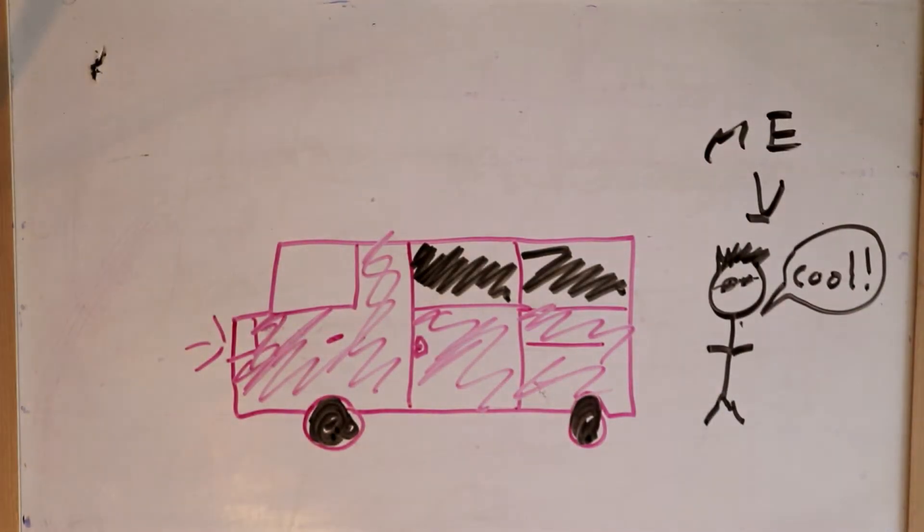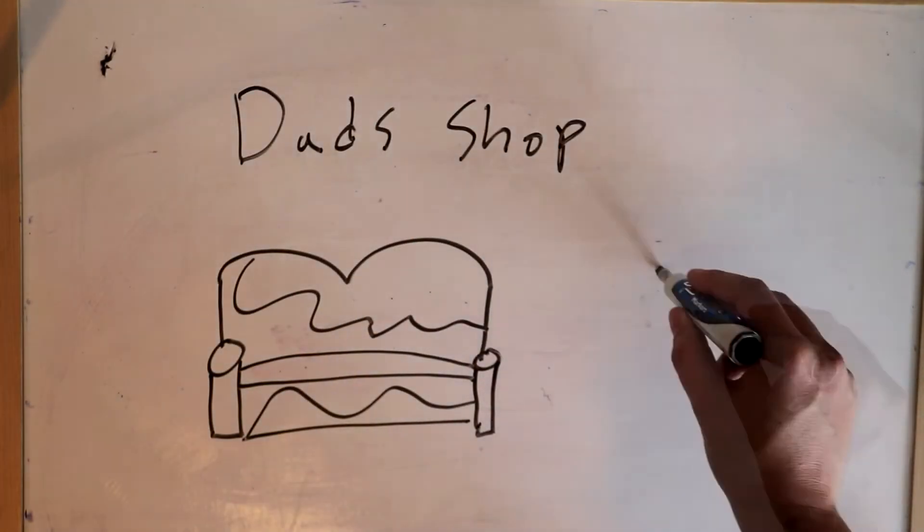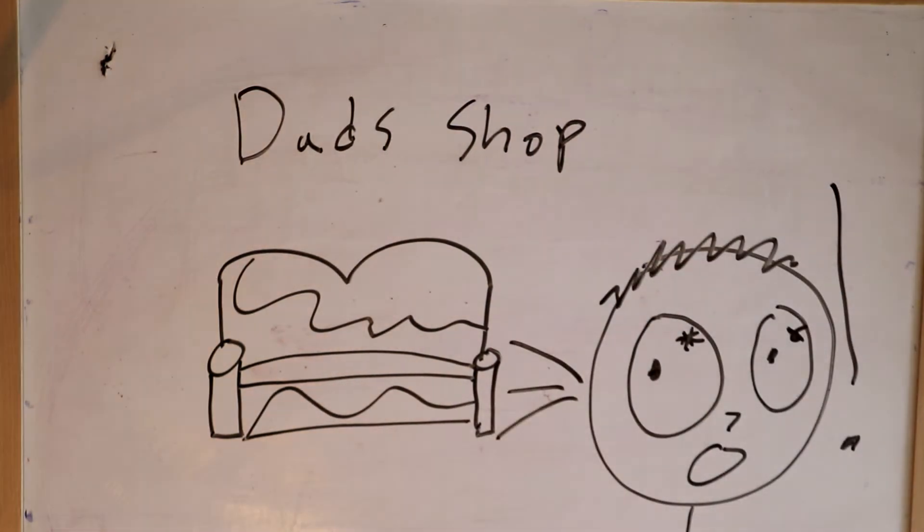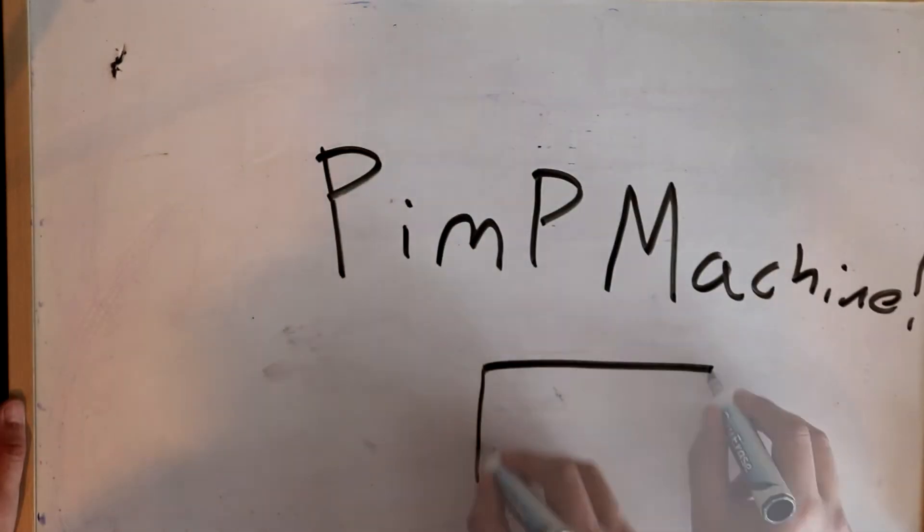So my dad owned a furniture store at the time, still does. And one day a small couch came in that rolled out into a bed. I put two and two together and my eyes lit up. This had to go in the van. So we cut it out and made it fit and it worked. We have made a pimp machine.